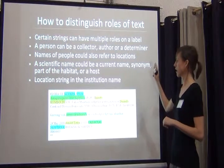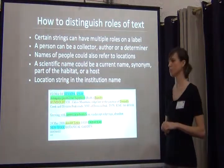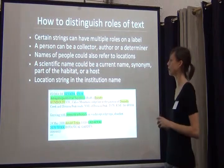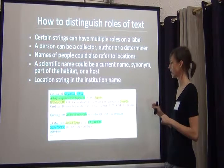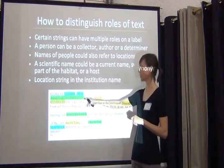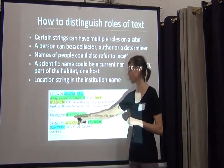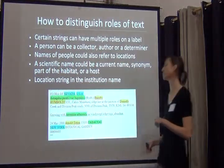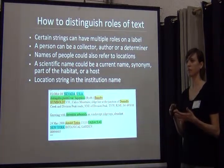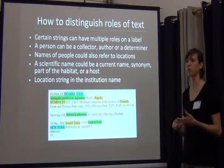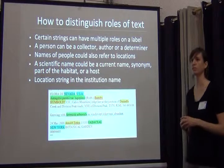We need to figure out how do we tell the difference — which one of these is the collector? If you're a computer dealing with just this group of text, how do you pull out the fields you're looking for? We also have scientific names. This actual specimen is Astragalus persii, but we have another full scientific name on the label as part of the habitat — it's growing with Artemisia. So you have to distinguish between the current name, maybe older names on the label, multiple determinations, part of the habitat, or even hosts. A lot of our fungal collections have host plant associations too.